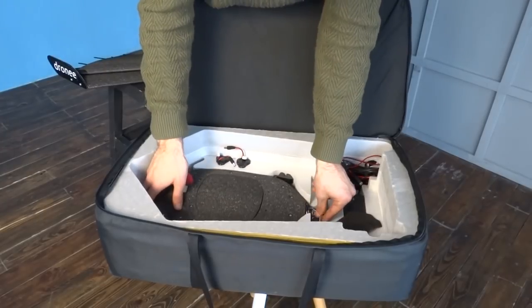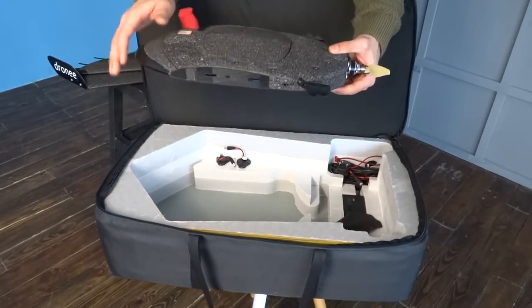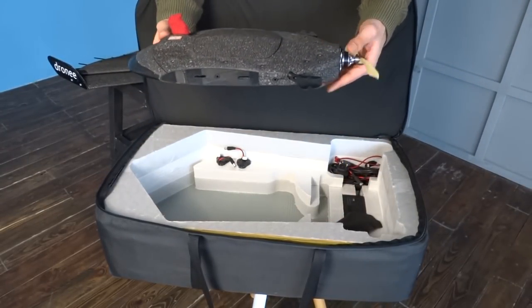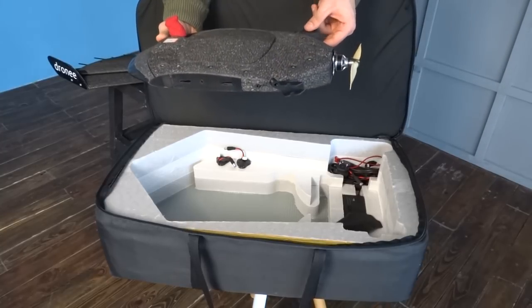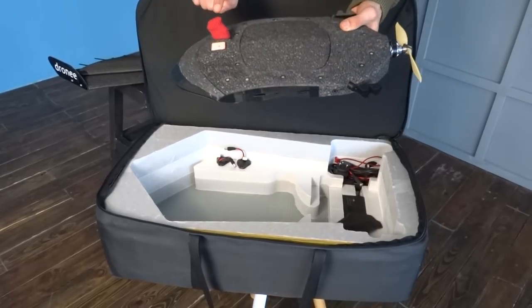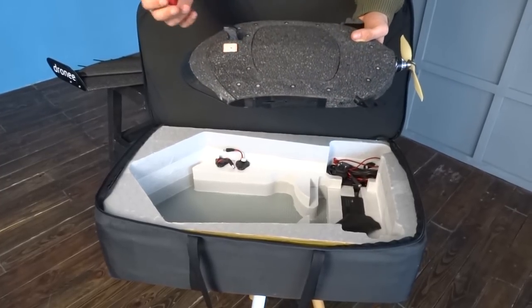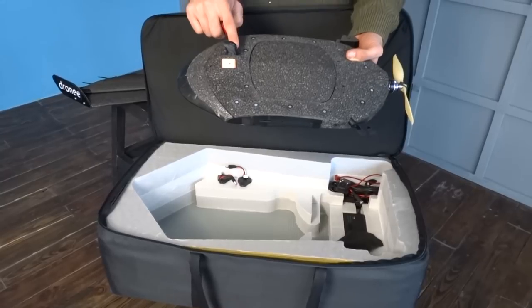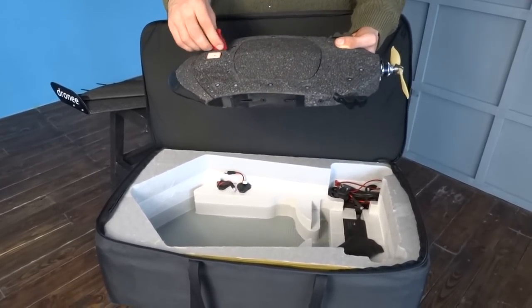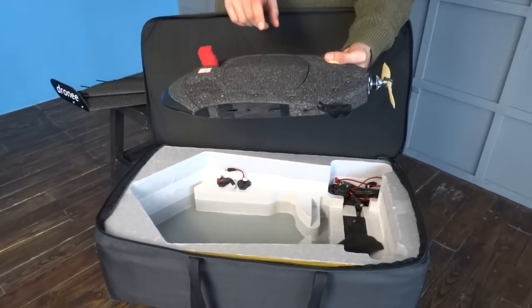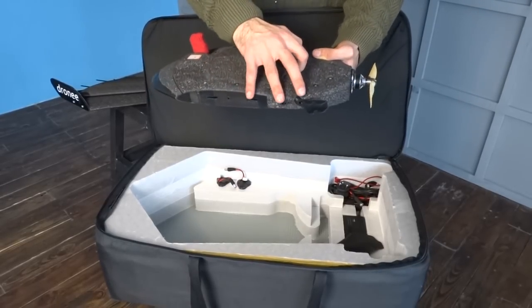This is the central body of the plane. It includes all the electronics inside. It has several mechanisms here that control the control surfaces. We have here the airspeed sensor and the antenna also inside. This is the airspeed cover. It should be covered when you power the drone to calibrate the airspeed sensor.